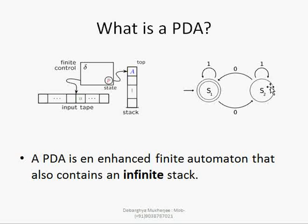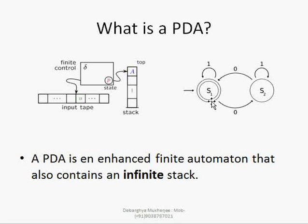In this FA example, if we apply 1 over state s1 it will remain in s1; if we apply 0 it will come to s2. When we apply 1 over s2 it stays in s2, and if we apply 0 over s2 it comes back to s1. Here s1 is our final state as well as initial state.